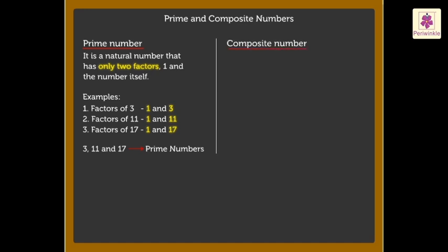A composite number is a natural number that has more than two factors. Look at these examples. The factors of 6 are 1, 2, 3 and 6.